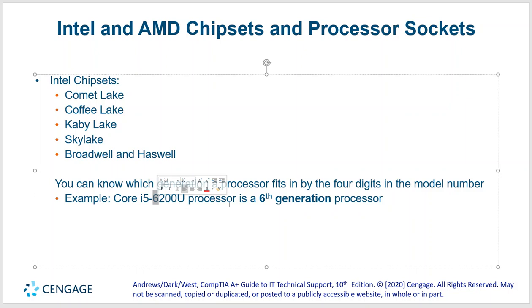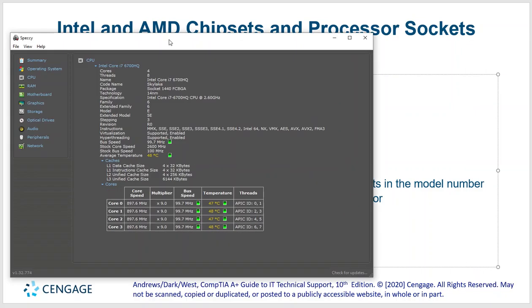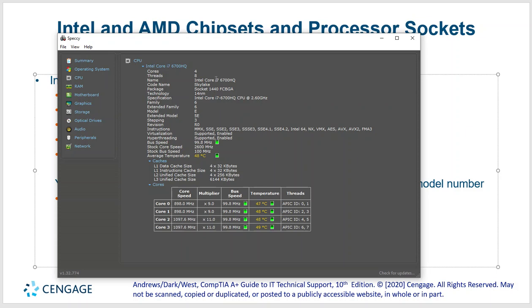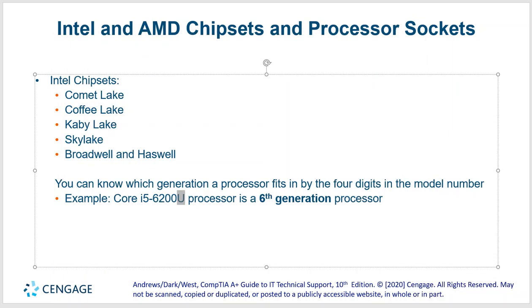For example, an i5-6200 is a sixth generation processor. The '200' part indicates how good it will be — the higher the number, the better. I have an example here from Speccy: a Core i7-6700HQ. The '6' means sixth generation, roughly about 2016. The 700HQ is performing better than a 200HQ — HQ meaning high quality. You'd have something like this for gaming. This chip has the Skylake architecture, and Speccy shows temperatures and how all the different cores are running. Speccy is a great program — we'll talk about that more later.